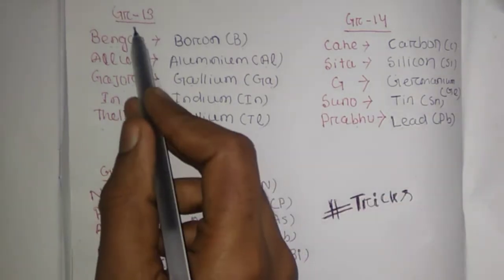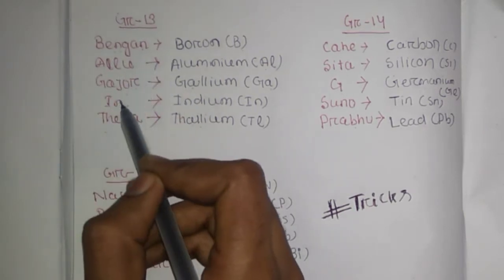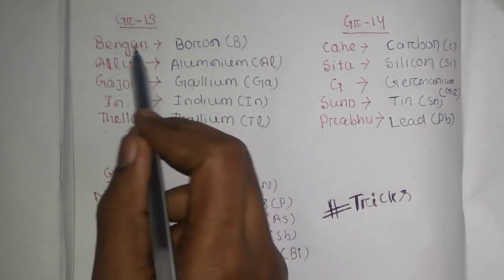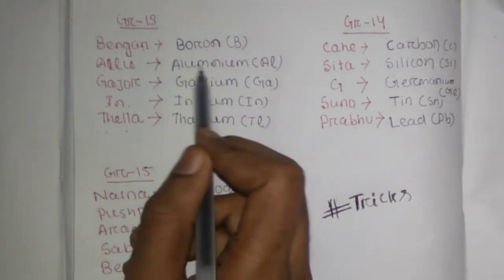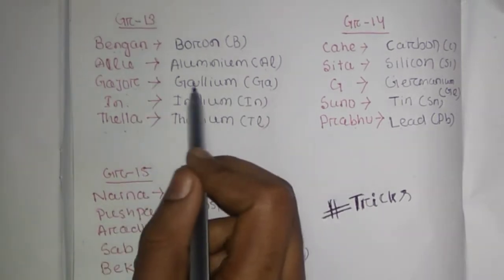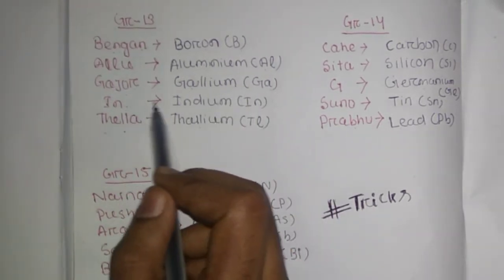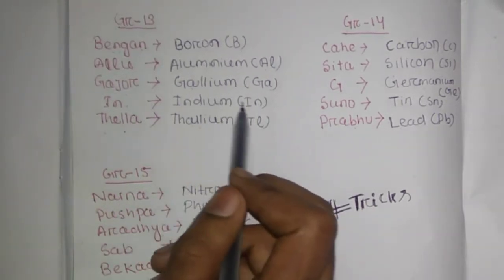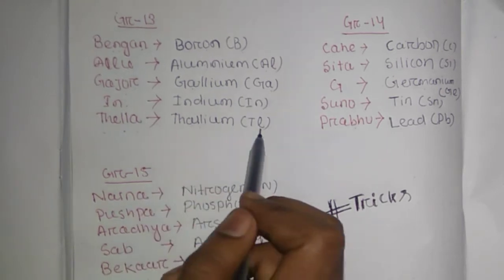Group number 13 trick is: Bangan, Alu, Gajar, In, Thela. Bangan for Boron (B), Alu for Aluminium (Al), Gajar for Gallium (Ga), In for Indium (In), Thela for Thallium (Tl).